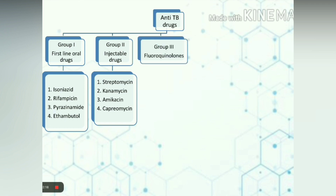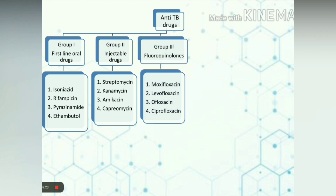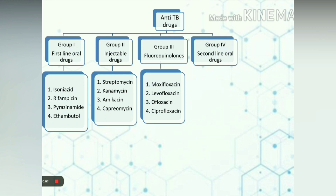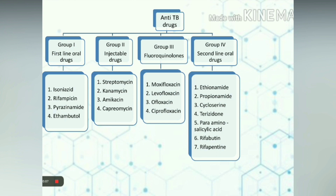Group 3 are the fluoroquinolones which consist of moxifloxacin, levofloxacin, ofloxacin, and ciprofloxacin. Group 4 are the second-line oral drugs which include ethionamide, prothionamide, cycloserine, terizidone, para-aminosalicylic acid, rifabutin, and rifapentine.